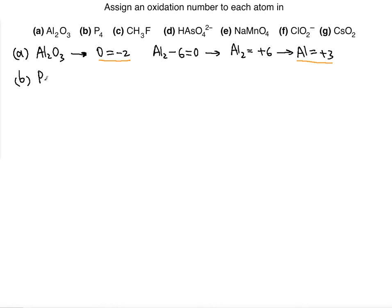The second part deals with phosphorus P₄. We know this is an individual elemental atom — even though there are four of them, the rule says the neutral charge still holds. So P₄ is equal to 0, and each individual atom is also equal to 0. That's the oxidation number for phosphorus.